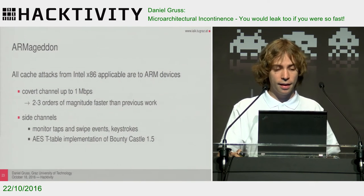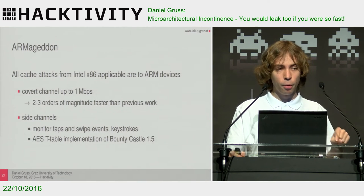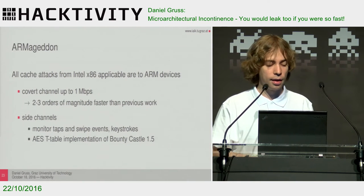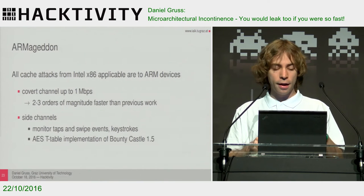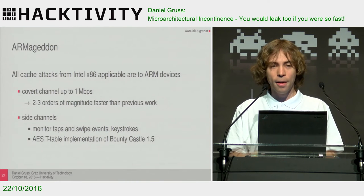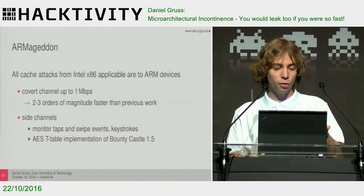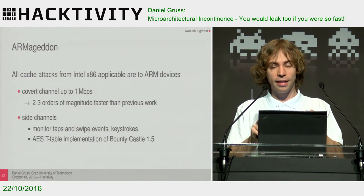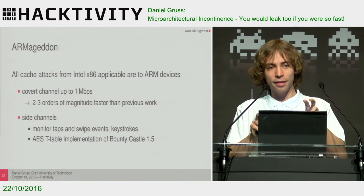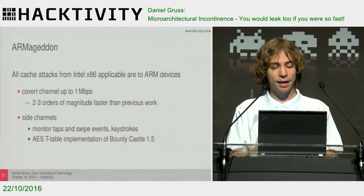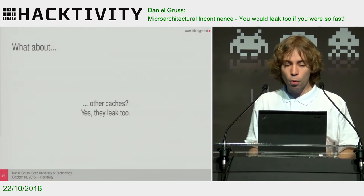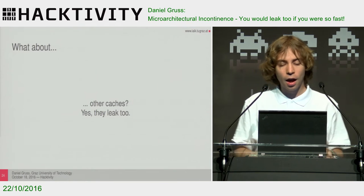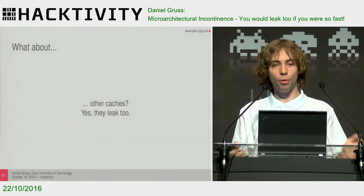Side channels are also possible on ARM: we can monitor taps and swipes just as accurately as the keystrokes I showed before. We can also attack crypto implementations — Bouncy Castle still has an AES T-table implementation as its fast path, so if you want the fast AES implementation in Bouncy Castle, you will be insecure. So what about other caches? There is more than just data caches in CPUs. Recently we investigated that, and yes, they leak too. All caches leak. Branch prediction caches leak.